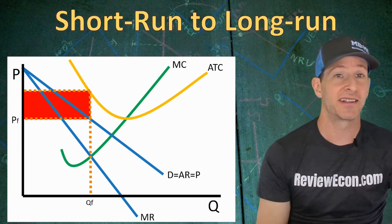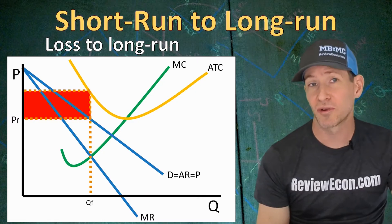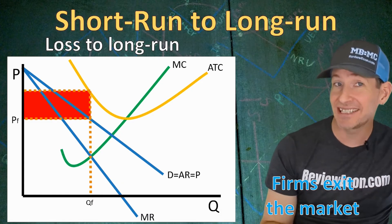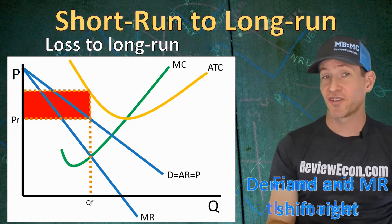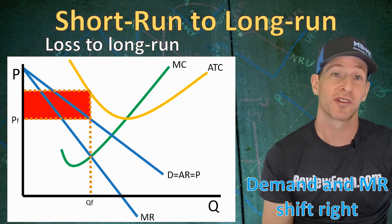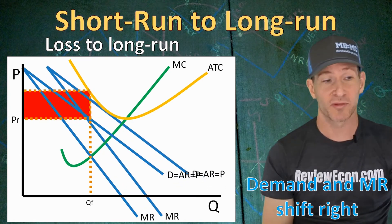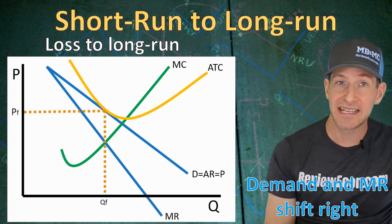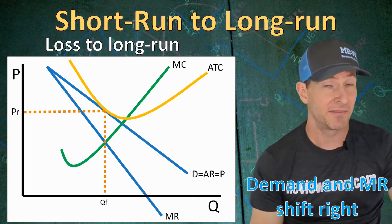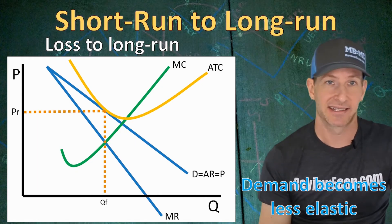Starting from economic losses: firms exit the market to flee the losses. When that occurs, each remaining firm has a bigger share of the market, meaning more consumers. That increases demand, dragging the marginal revenue curve with it, until the firm breaks even at a new higher profit maximizing quantity. Since firms exiting the market means fewer substitutes available, the demand curve becomes less elastic.